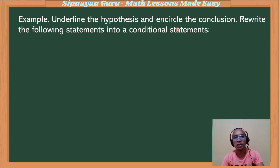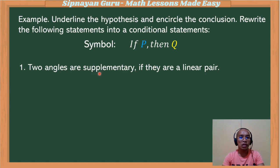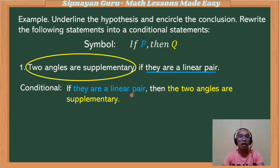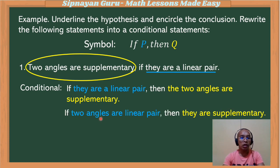Let's consider this example. Suppose you are asked to underline the hypothesis and encircle the conclusion, and then rewrite the statement into a conditional statement. First statement: 'Two angles are supplementary if they are a linear pair.' The hypothesis follows after 'if,' so 'they are a linear pair' is our hypothesis, and 'two angles are supplementary' is the conclusion. Conditional statement: 'If they are a linear pair, then the two angles are supplementary.' Or alternatively: 'If two angles are a linear pair, then they are supplementary.'